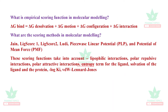The empirical scoring function in molecular modeling is given by: ΔG_bind equals ΔG_solvation plus ΔG_motion/configuration plus interaction terms. Scoring methods used in software include JAIN, LigScore1, LigScore2, LUDI, PiecewiseLinearPotential (PLP), and Potential Mean Force (PMF). These scoring functions take into account lipophilic interactions, polar repulsive interactions, polar attractive interactions, solvation energy, log Ki, van der Waals, and Lennard-Jones energy.